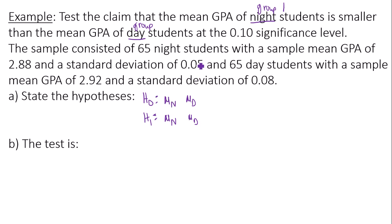Now the claim is night students mean GPA is smaller than or less than the mean GPA. Since this does not include equality, smaller than or less than goes in the alternative hypothesis. Now the opposite sign of less than is to say greater than or equal to, or in most cases you would just write equal to.